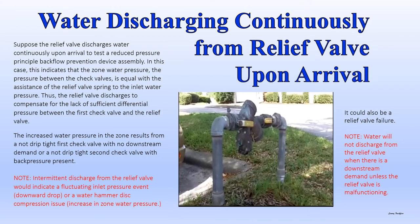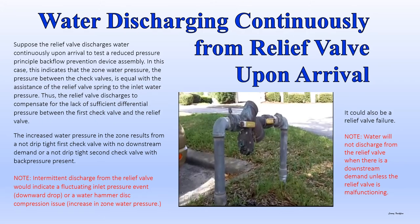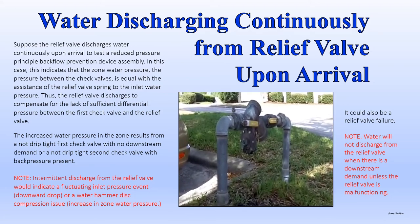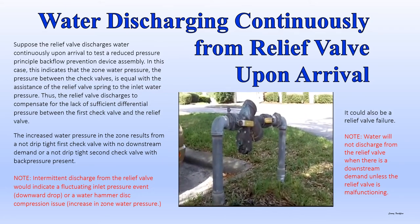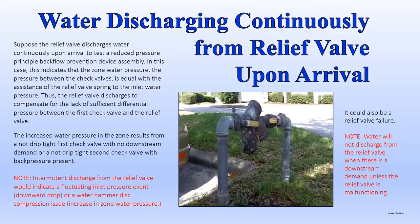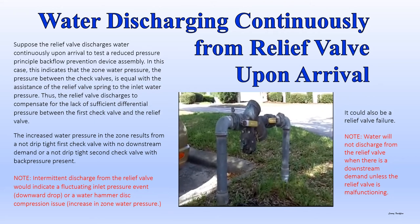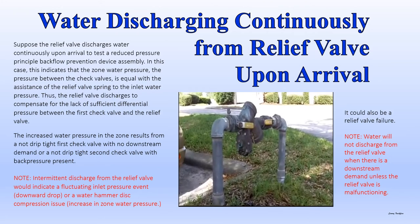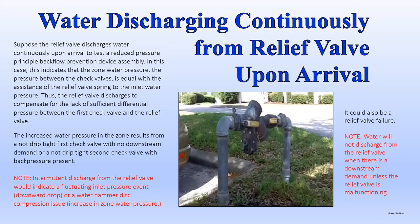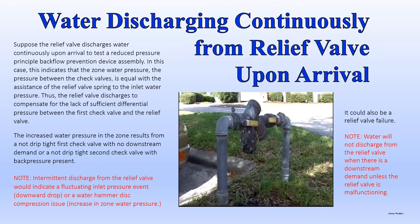Water discharging continuously from the relief valve upon arrival. Suppose the relief valve discharges water continuously upon arrival. This indicates that the zone water pressure between the check valves is equal, with the assistance of the relief valve spring, to the inlet water pressure. The relief valve discharges to compensate for the lack of sufficient differential pressure. The increased water pressure in the zone results from either a not-drip-tight first check valve with no downstream demand, or a not-drip-tight second check valve with back pressure present. Intermittent discharge would indicate a fluctuating inlet pressure or a water hammer disc compression issue. It could also be a relief valve failure. Water will not discharge from the relief valve when there is a downstream demand unless the relief valve is malfunctioning.